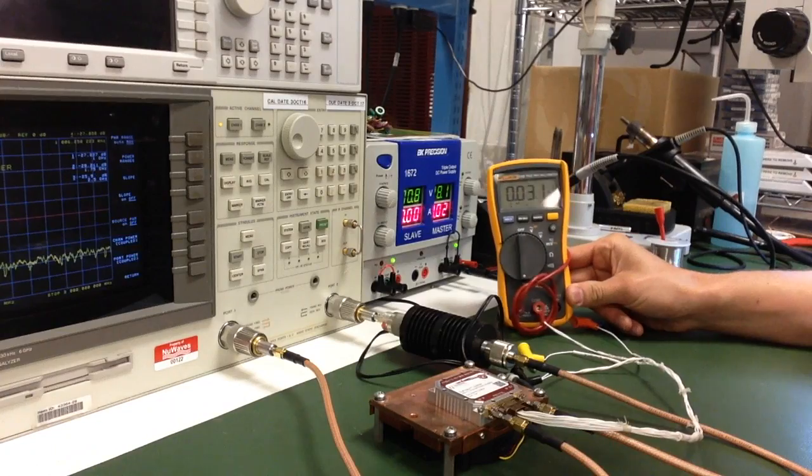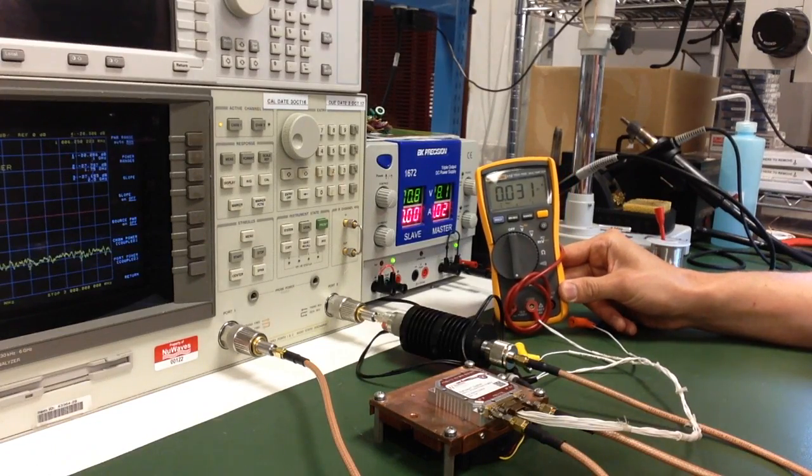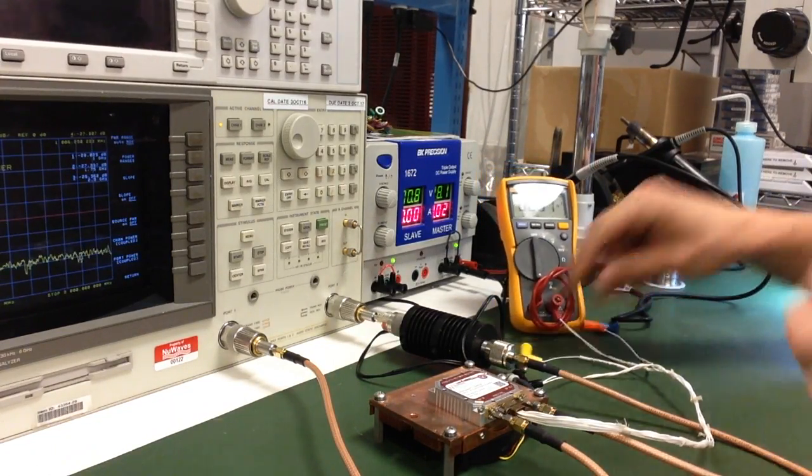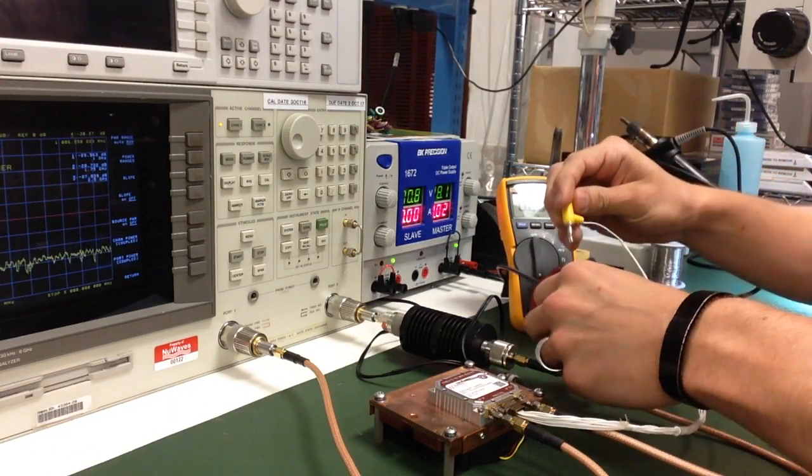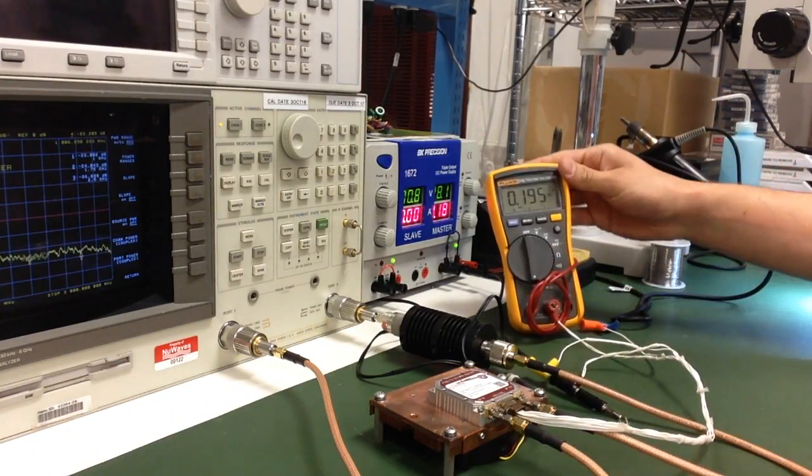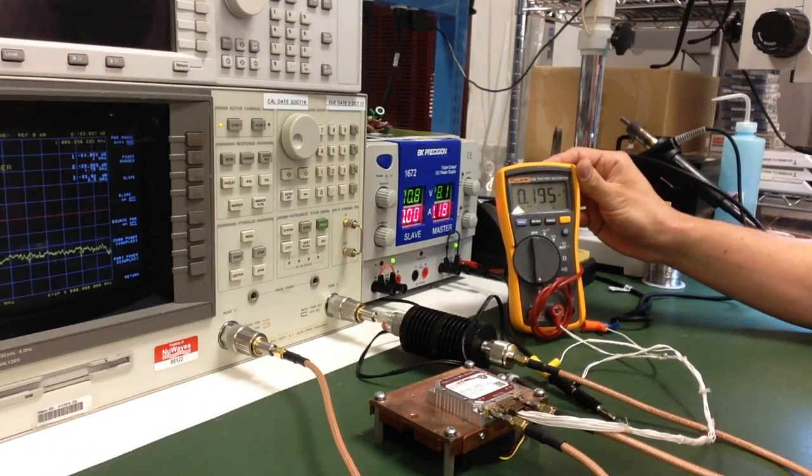You can see I'm drawing a quiescent current of approximately 30 milliamps. I'm going to take my RF enable pin and ground that. I should see it jump up to approximately 200 milliamps.